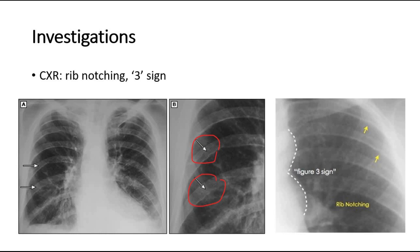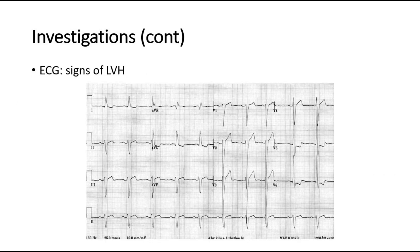We can also do an ECG and look for signs of left ventricular hypertrophy. This picture shows an ECG with signs of LVH, where in V5 and V6 there is a dominant R wave, and in V1 and V2 there is a deep S wave, with the total being more than 7 big squares — these are suggestive of left ventricular hypertrophy.